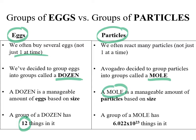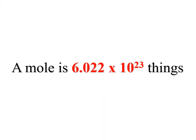A mole is an amount of things, just like a dozen is — it just happens to be a larger amount. It's not tied to any one particular particle; you could use it for eggs, donuts, muffins, or whatever. Generally, because it's such a large number, you want to be dealing with small things. It works for atoms, molecules, ions — whatever it happens to be. So a dozen is 12; a mole is 6.022 times 10 to the 23.